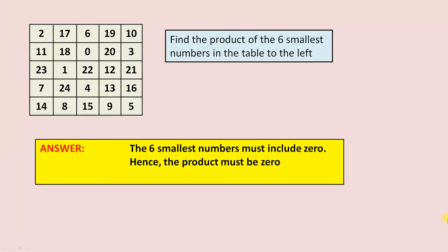Find the product of the six smallest numbers in the table to the left. Answer: The six smallest numbers must include zero. Because you see here, if you look carefully, you'll see there's a zero. Hence, the product must be zero. Of course, anything you multiply by zero, doesn't matter how many numbers you have, the answer must be zero.